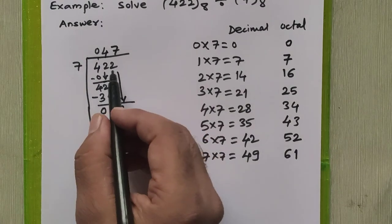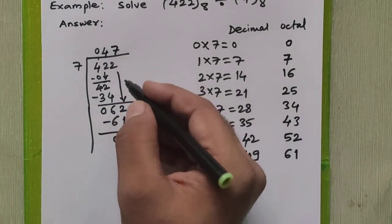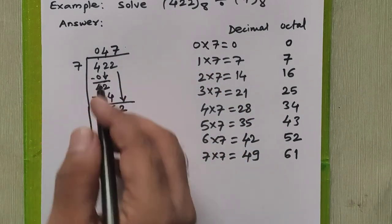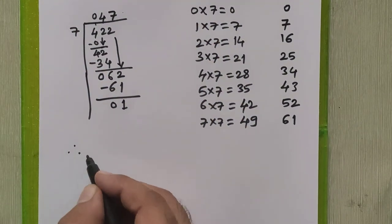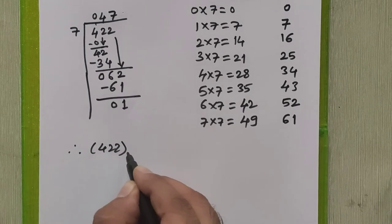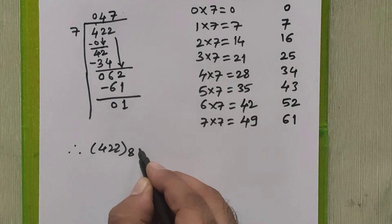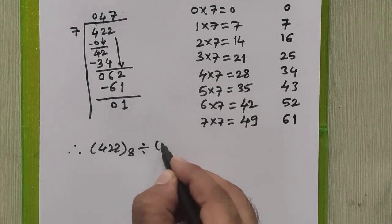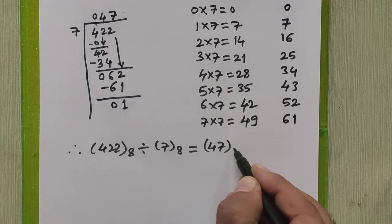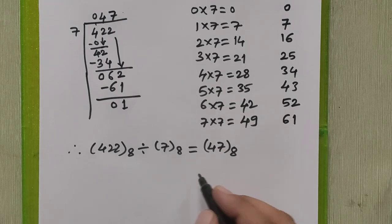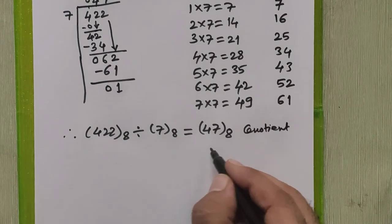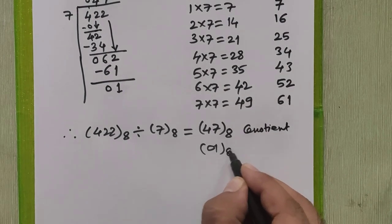Therefore we can say that 422 octal divided by 7 in octal is equal to 47 in octal—it is the quotient—whereas 01 in octal is remainder.